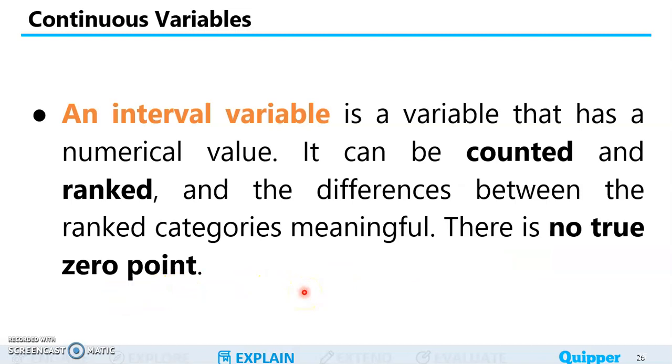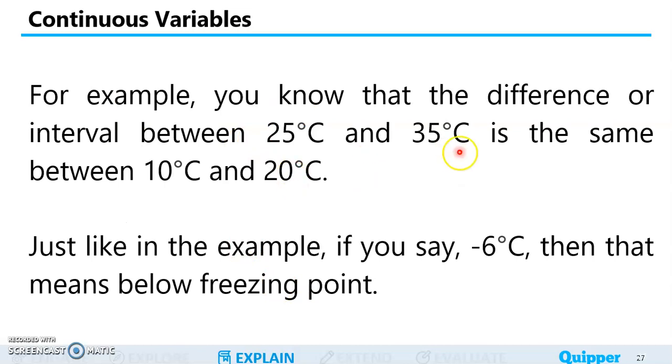What does no true zero point mean? It means the zero value doesn't mean the absence of that variable. For example, you know that the difference or interval between 25 degrees Celsius and 35 degrees Celsius is the same between 10 degrees Celsius and 20 degrees Celsius. The difference between them is 10 degrees Celsius. So we have here rankings.